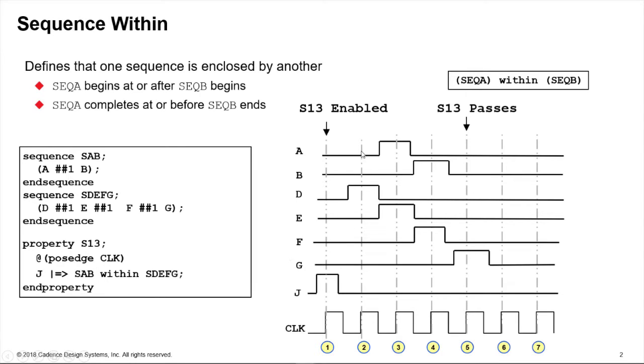So here's one example of it passing. J occurring then we have DEFG, so we know at cycle five the property has a chance of passing as long as we observe the sequence A followed by B. Here on cycle three to four we have the sequence A followed by B, therefore we deem to have passed on cycle five.